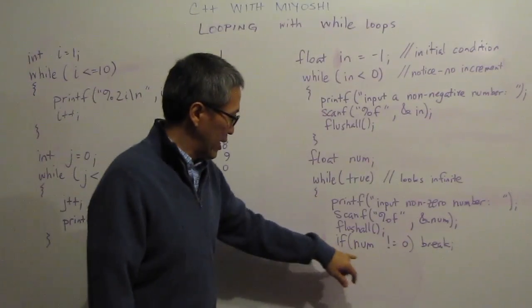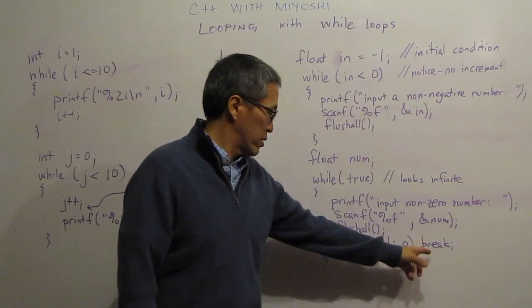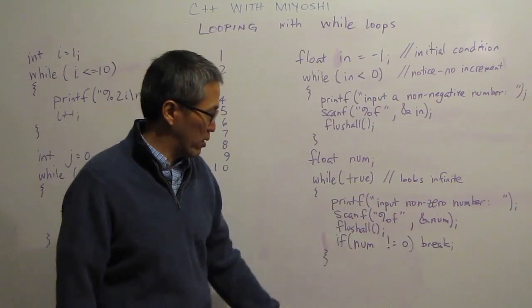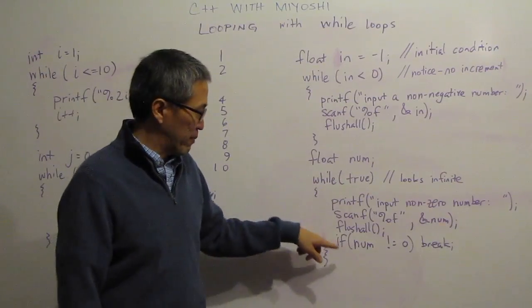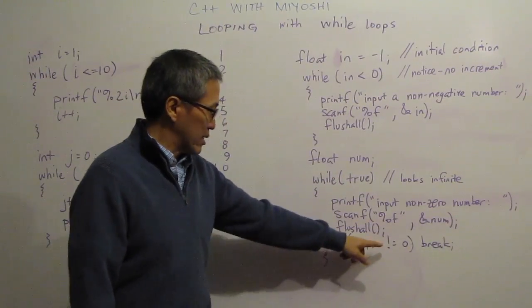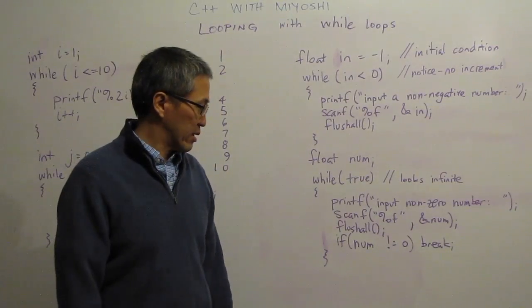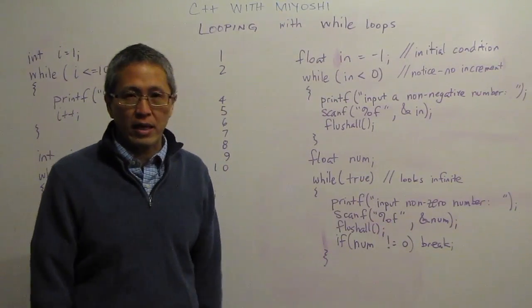And then this little guy here is my key to this not being an infinite loop. The key here is that if my number is not zero then I'm going to break. This says give a non-zero number. So as long as the user puts in a zero it's going to stay in the loop. But as soon as it becomes not zero it's going to hit the break and it's going to come down and continue merrily along its way after that curly brace.